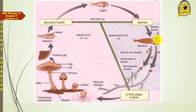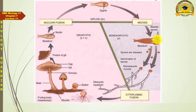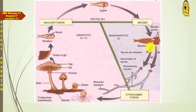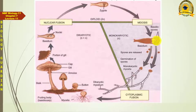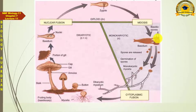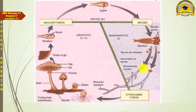Since basidiospores are meiotic products, they are genetically different from each other. When these basidiospores detach and fall on a suitable place, if they get favorable conditions, germination occurs. Basidiospores have the ability to survive unfavorable periods. When favorable conditions are available, each basidiospore germinates.